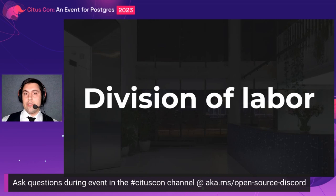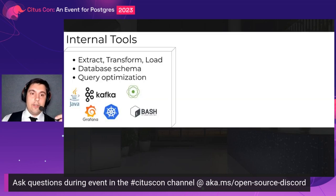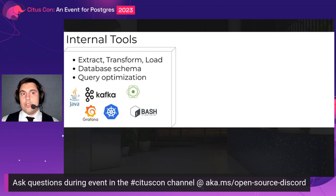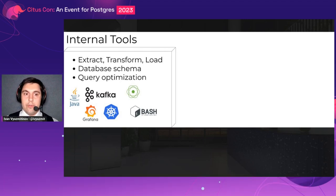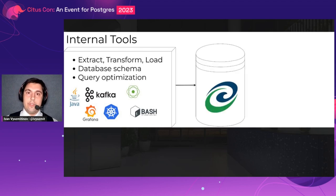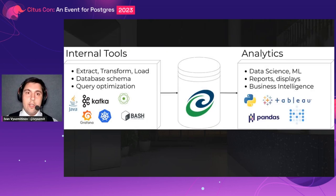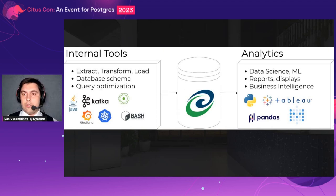First, I'd like to discuss the division of labor in our company. We have my department — internal tools — which is essentially a data engineering department. We extract data from various sources, prepare and clean it, and store it into a data warehouse. From the other side, there is an analytical department that uses that prepared data for reports, machine learning tasks, et cetera. This talk will mostly focus on the data engineering side.